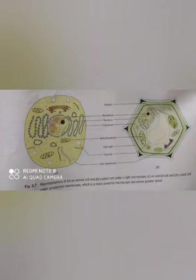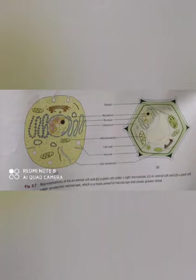Next is plastids. Plastids are present only in plant cells, just like the cell wall. Plastids are made up of pigments or food materials. There are three types of plastids: chloroplast, chromoplast and leucoplast. Chloroplasts are the plastids that have a green pigment called chlorophyll, which gives leaves their green color.